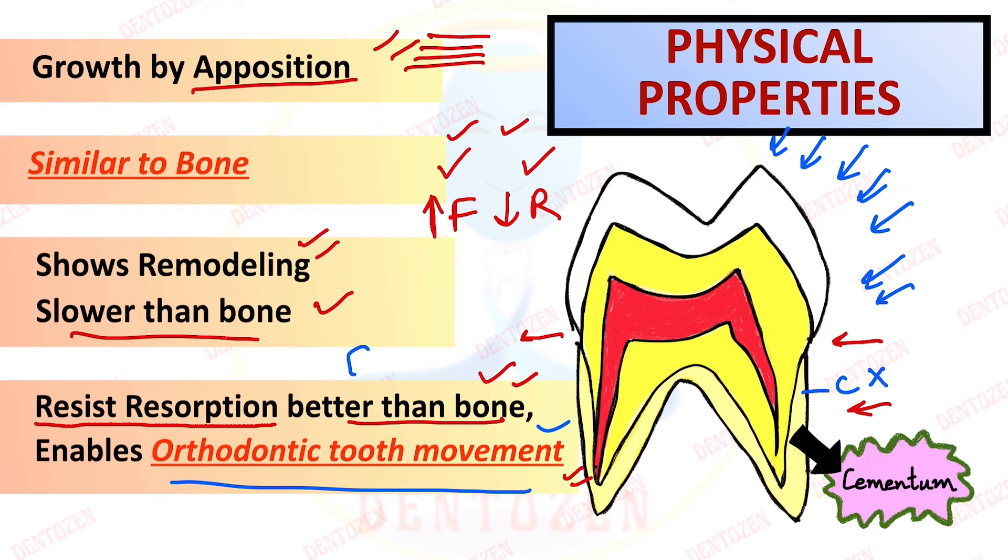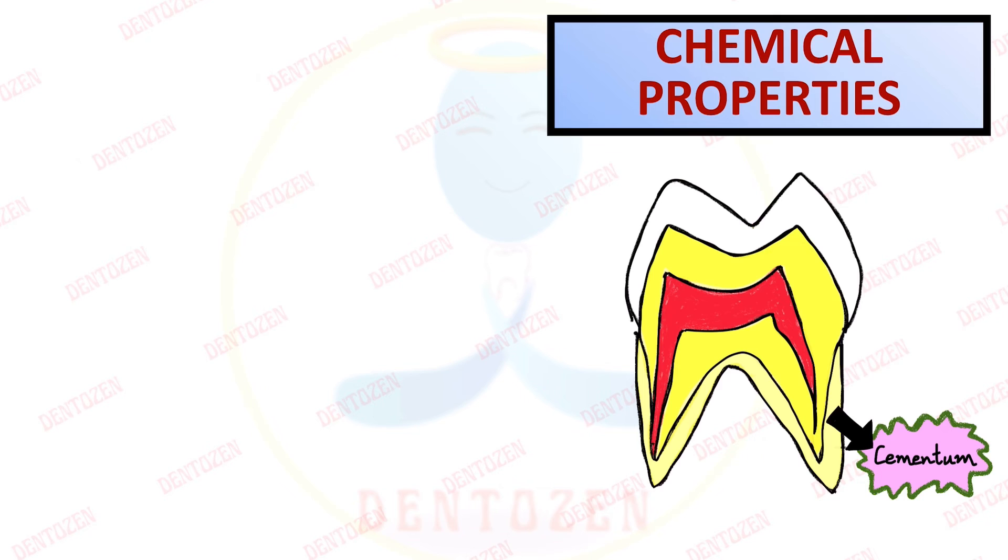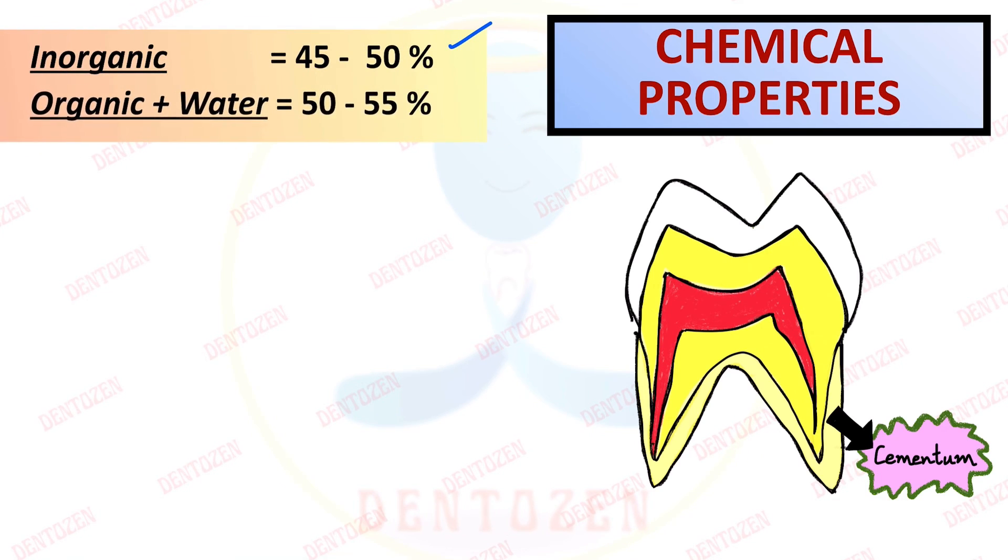So that can be your entrance question. Whether its resorption is less than bone or more than bone. So it is less than bone, because of which it helps in the orthodontic tooth movement. Now we talked about the chemical properties. Inorganic component is 45 to 50% and organic plus water is 50 to 55% by weight. So its inorganic component is less than all other hard tissues, enamel, dentine, bone. That can be your entrance question. Whether its inorganic component is less than bone or more than bone. So it is less than bone.